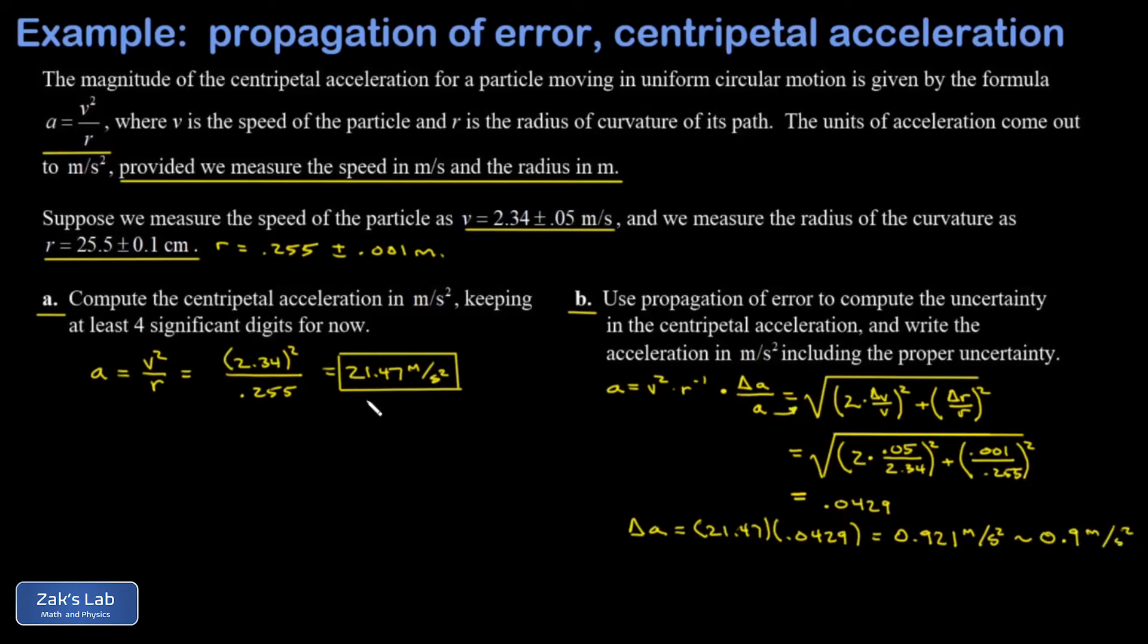Then go back and round the original quantity to the same decimal place that is addressed by the uncertainty. I'm going to round this to the tenths place, and I have my final answer for the centripetal acceleration: 21.5, because the tenths place is the place value addressed by the uncertainty, plus or minus 0.9 meters per second squared. And we're done.